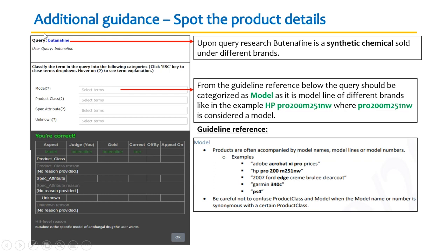Let's look at a couple of examples. If your query is 'butenafine,' upon research you find that butenafine is a synthetic chemical sold under different brands. This is one of the tasks where you would be asked to categorize into model, product class, spec attribute, or unknown. Always go through the guidelines first. For every query, you need a guideline reference — that's how you decode and clear your qualifications. In this case, butenafine is the specific model of an anti-fungal drug, and entering 'model' tells you your judgment is correct.